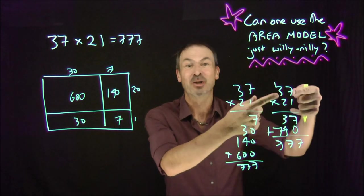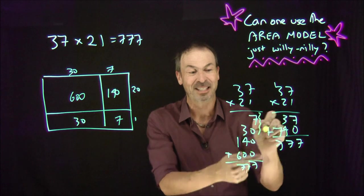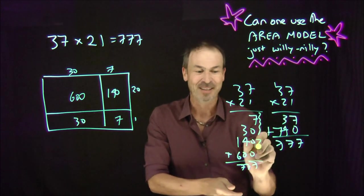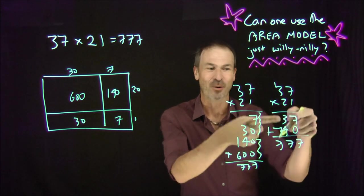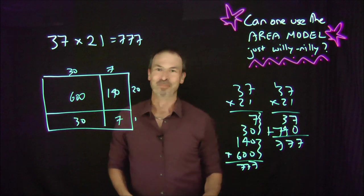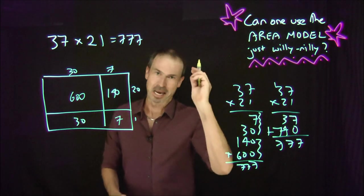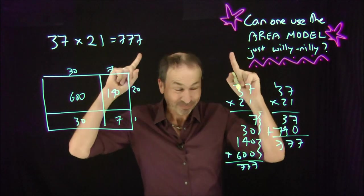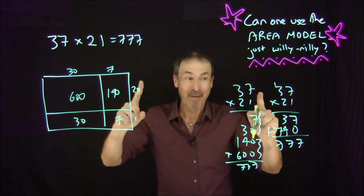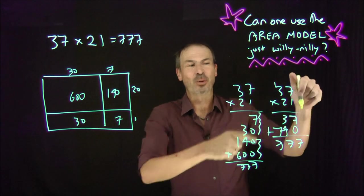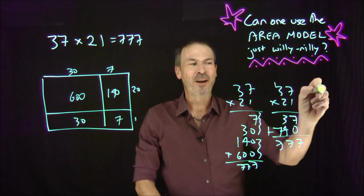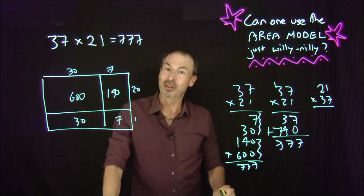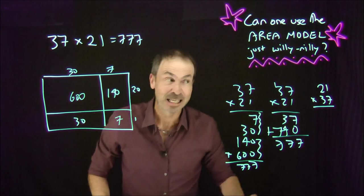But do you see that this is really a compact form of the area model? There's the 30 and the 7, that's 37. There's the 140 and the 600 — 740. Add it together. We save ink because ink is really precious to this day. What I love about this is 37 times 21 — what if I flip it around? If I do the standard algorithm in the other order, it looks completely different.